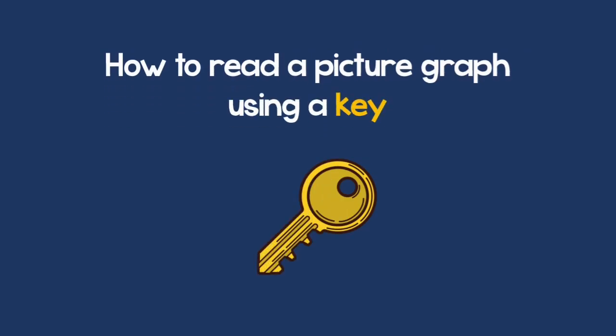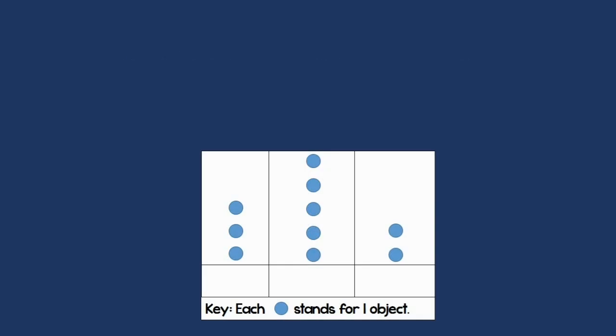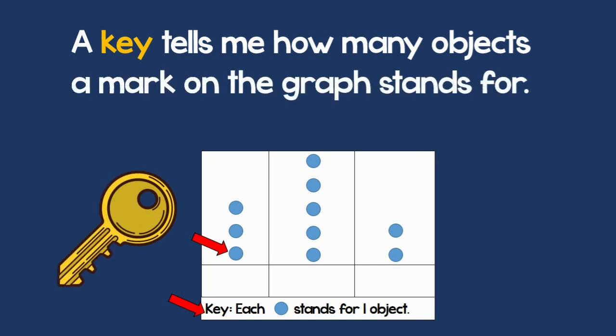In this lesson we will learn how to read a picture graph using a key. This is a mark on the graph. The key tells me how many objects a mark on the graph represents. What does that mean? Let's see an example.